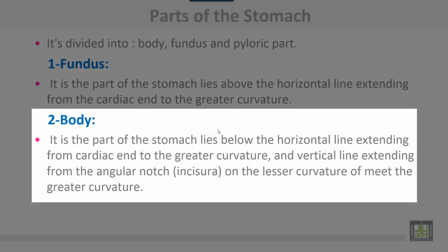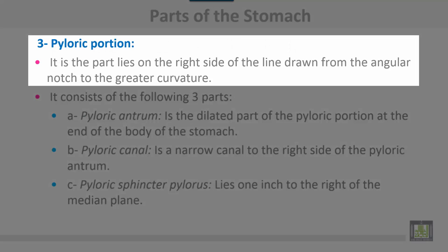The body of the stomach is the part that lies below the horizontal line extending from the cardiac end to the greater curvature. A vertical line extending from the angular notch, or incisura, on the lesser curvature of the stomach meets the greater curvature. The pyloric portion of the stomach is the part that lies on the right side of the line drawn from the angular notch to the greater curvature.